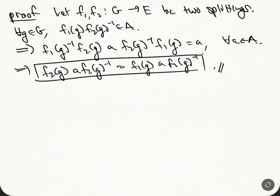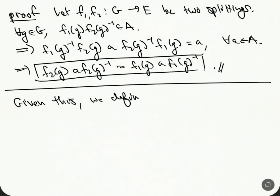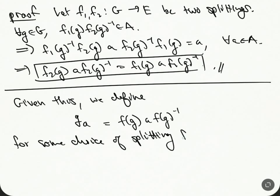So this is what we wanted to show. The two actions are exactly the same. Given this, we define g·a to be equal to F(g)·a·F(g)⁻¹ for some choice of splitting. Now we have this well-defined action, and it's independent of the splitting.